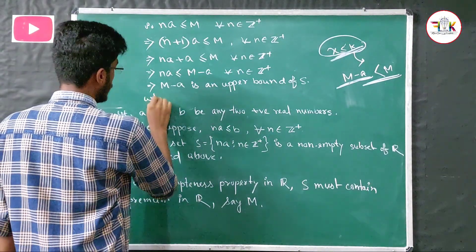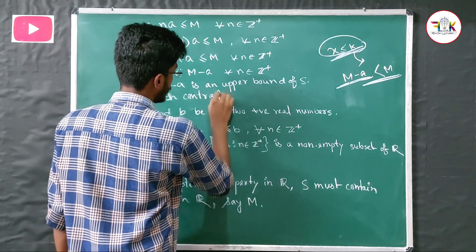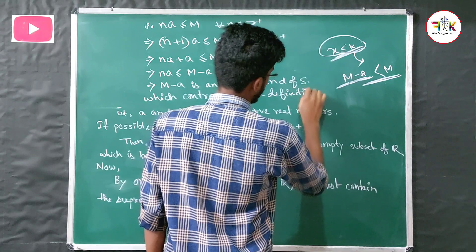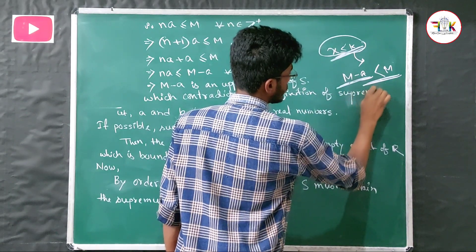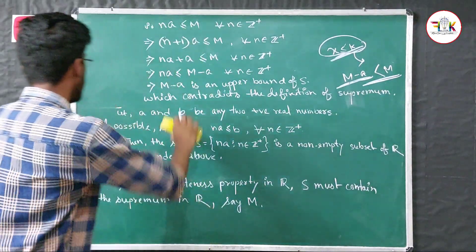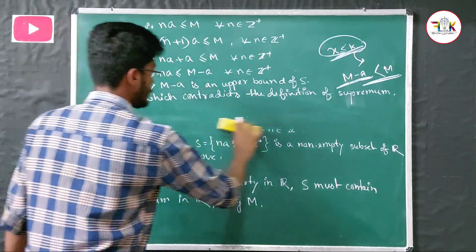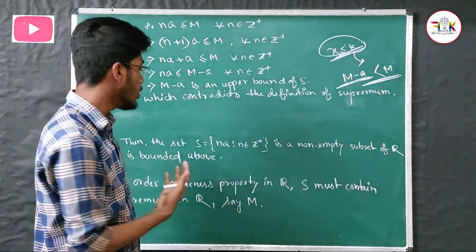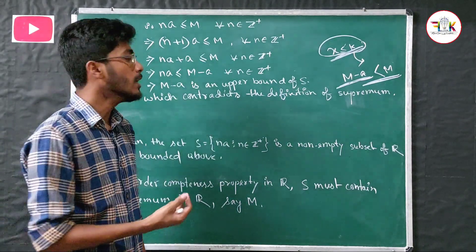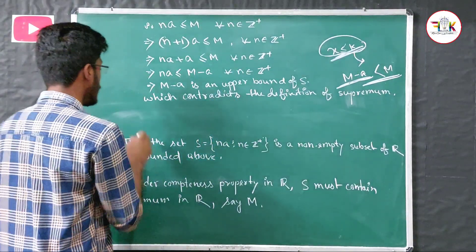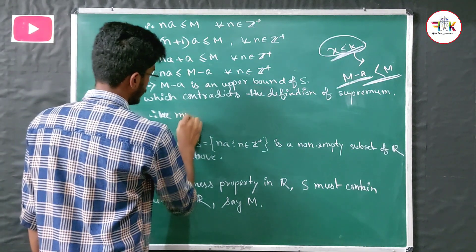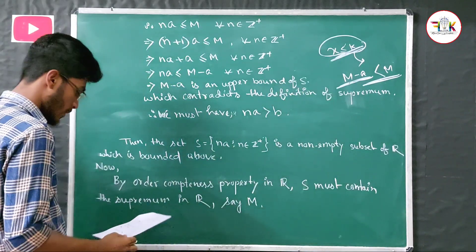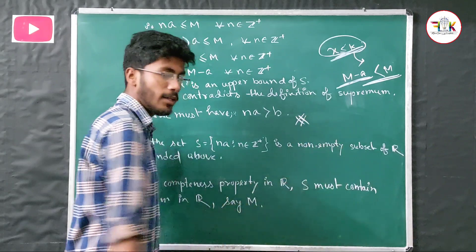This contradicts the definition of supremum, because M was supposed to be the smallest upper bound, but M - a is a smaller upper bound. Therefore na is greater than b. This completes the proof.